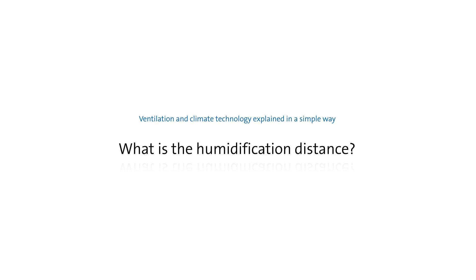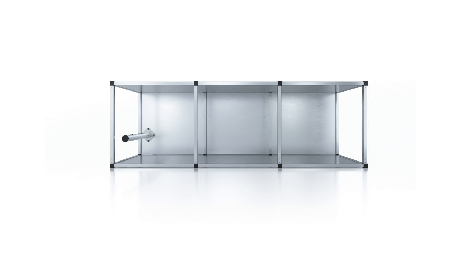Humidification distance. What does it mean? Any steam leaving the steam distribution pipe needs to pass a certain distance until it has been fully absorbed by the air passing through, until it is no longer visible as mist. This distance is called the humidification distance BN and serves as the basis for the calculation of the minimum distances to the components installed downstream.